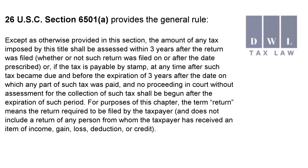26 U.S.C. Section 6501(a) provides the general rule: except as otherwise provided in this section, the amount of any tax imposed by this title shall be assessed within three years after the return was filed, whether or not such return was filed on or after the date prescribed, or if the tax is payable by stamp at any time after such tax became due and before the expiration of three years after the date on which any part of such tax was paid, and no proceeding in court without assessment for the collection of such tax shall begin after the expiration of such period.